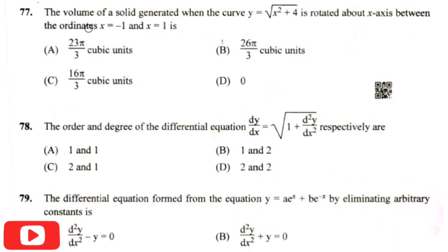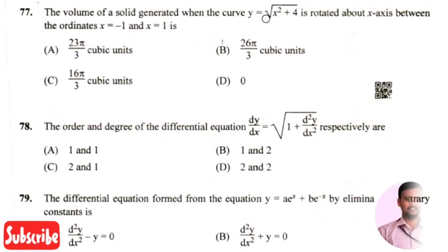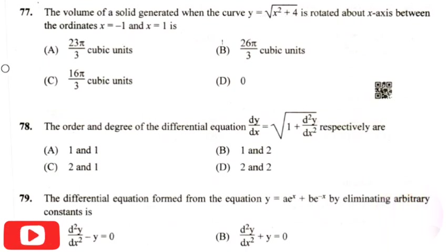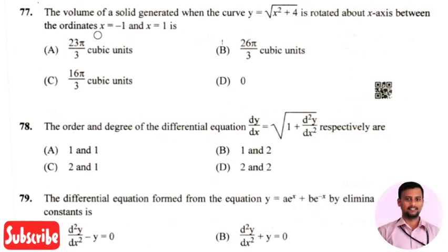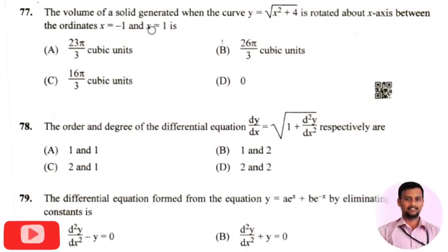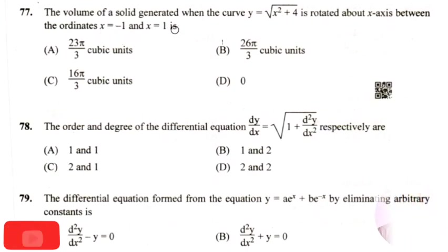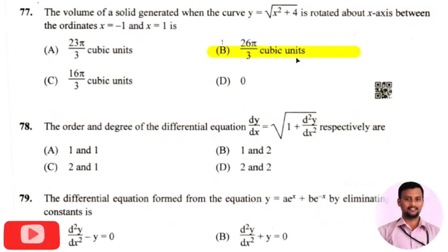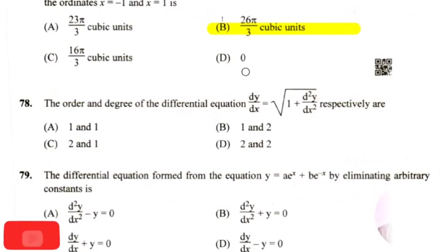The next question: the volume of a solid generated when the curve y equals root(x squared plus 4) is rotated about the x-axis between the ordinates x equals minus 1 and x equals plus 1 is? The right answer is option 2, that is 26pi divided by 3 cubic units.